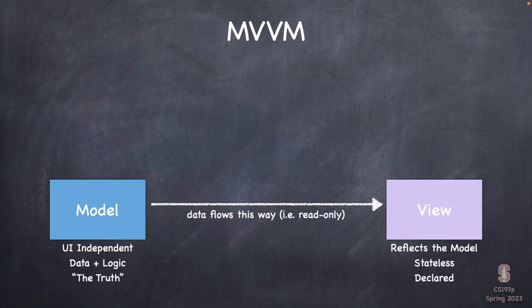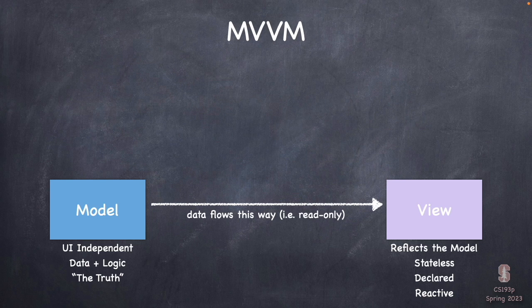Our view is declared — we don't write the code for our view in an imperative fashion. We just have our var body and list the views in our UI. We're declaring this is our UI, and then the model data drives it. Any part of our UI that can vary is changing because our model is changing. So it's declarative, and that results in the word we see a lot: reactive — the UI is reacting to changes in the model.